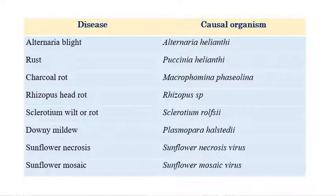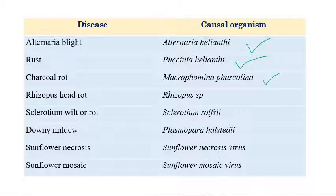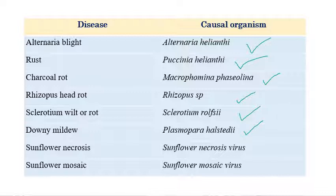Alternaria blight, caused by Alternaria helianthi; rust, caused by Paxenia helianthi; charcoal rot, caused by Macrophomina fasciolina; Rhizopus head rot, caused by Rhizopus species; Sclerotium wilt or rot, caused by Sclerotium rolfsii; downy mildew, caused by Plasmopara halstedii; sunflower necrosis, caused by Sunflower necrosis virus; and sunflower mosaic, caused by Sunflower mosaic virus.